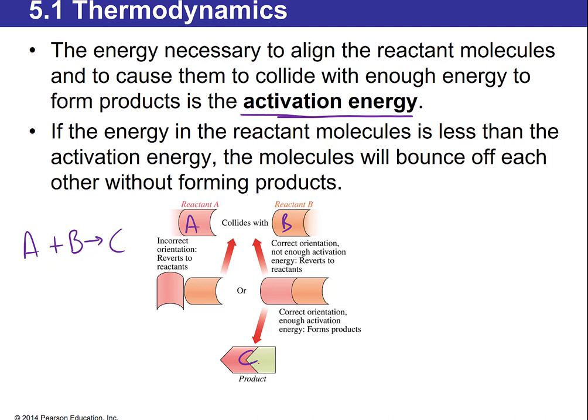You have to have the shapes of the two reactants come together correctly to react and form a product. Both molecules have to collide and be in the right orientation. If A and B collide this way they don't fit; they have to be just the right way for the reaction to occur between them.